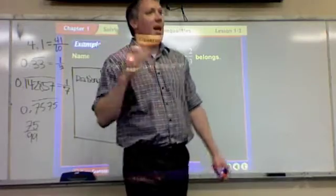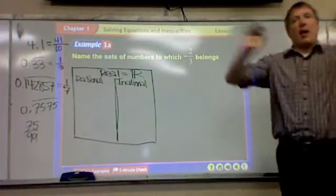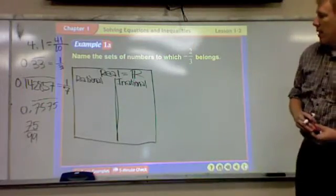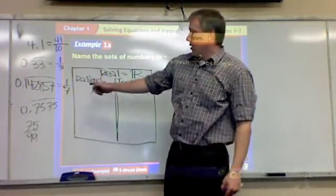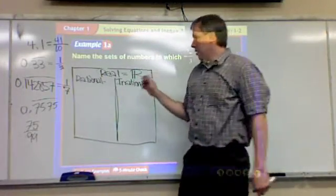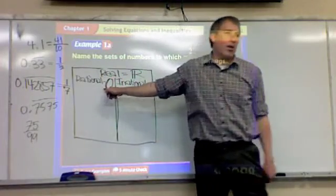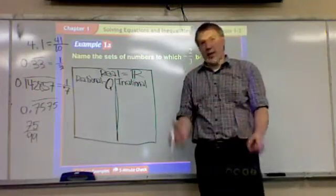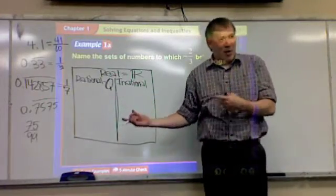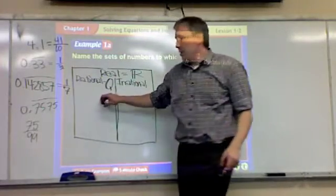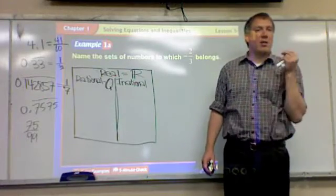Any number, any number that repeats itself or ends can be written as a fraction without decimals. So, the letter that we use for rational, obviously we can't use R, it's already taken. We use the letter Q, and all these letters, they have a double line to start on the left side.